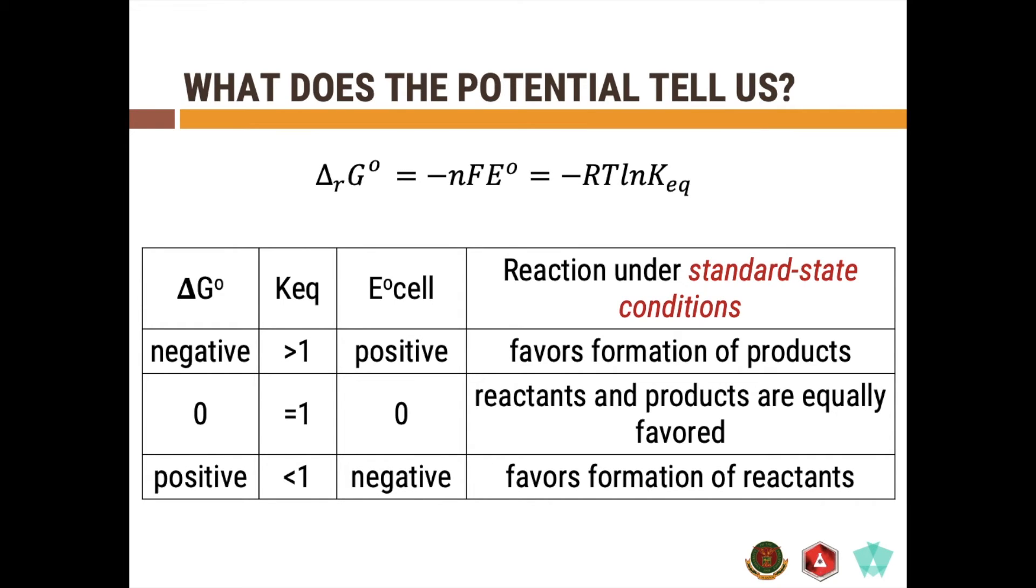And if you have a standard cell potential that is negative, then that means your Gibbs free energy is positive and the Keq or the equilibrium constant for your reaction as written is less than 1, then that means the reaction as written will favor the formation of the reactant. So you can say that the reaction is not spontaneous as indicated by the positive value of delta G.